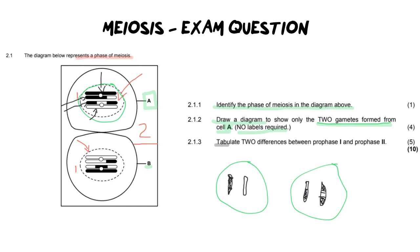Now the final question says tabulate. When you tabulate everybody it means to draw a table and you need to give two differences between prophase one and prophase two. Now that means you need to know what's important that happens there and what do we know happens in meiosis one, particularly prophase one? Crossing over. Does crossing over take place in prophase two? No, that's a difference. So crossing over takes place, doesn't take place.